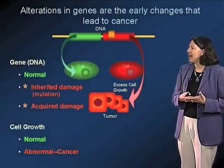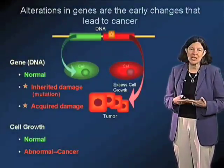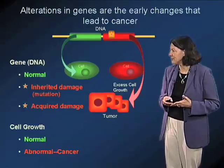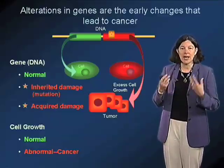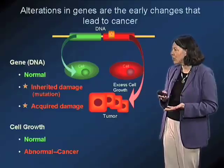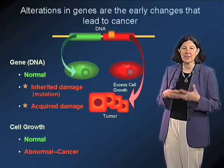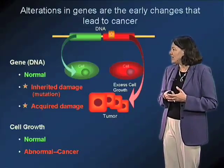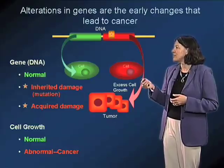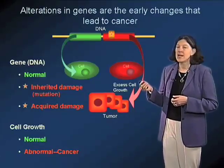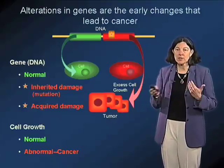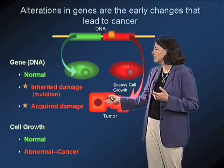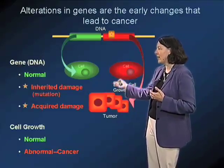We now appreciate that it's alterations in genes, the genetic material, that is really responsible for the early changes that lead to cancer. Normal genetic material in a healthy individual leads to control of cell growth, cell death, and all of the behaviors of cells. It's lesions in the DNA, mutations in those genes, that alter important regulatory pathways and lead to excessive cell growth or inadequate cell death, and ultimately tumor.